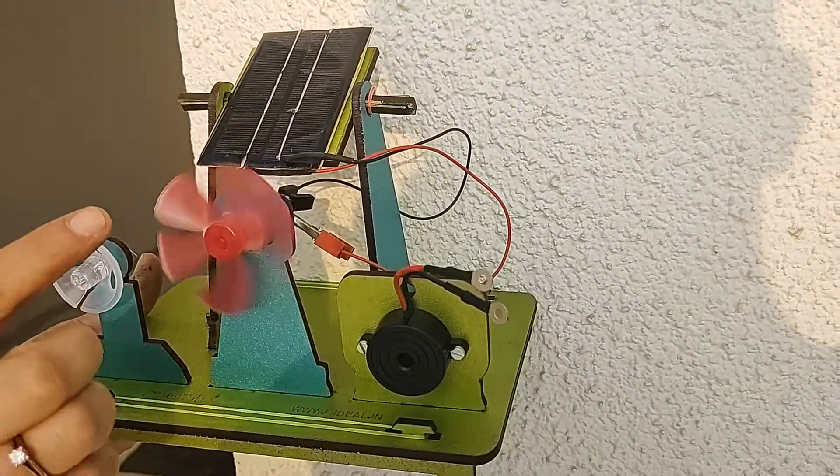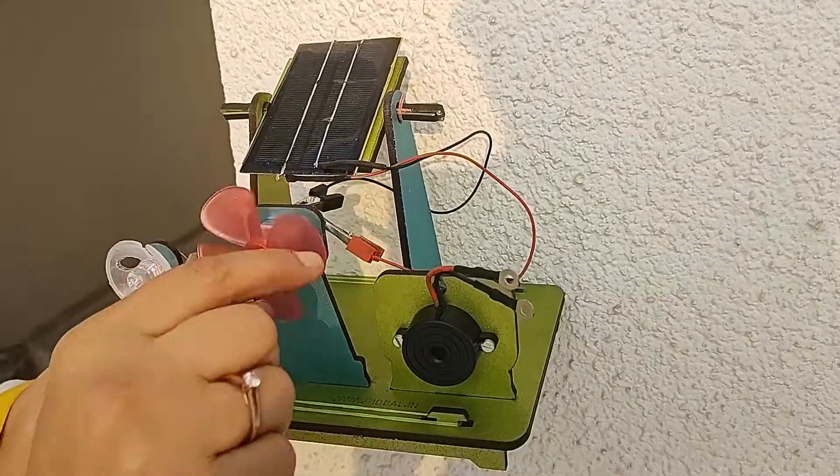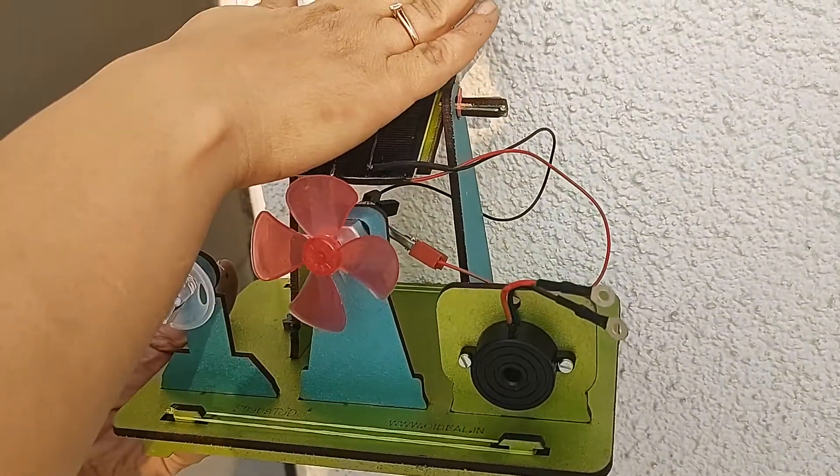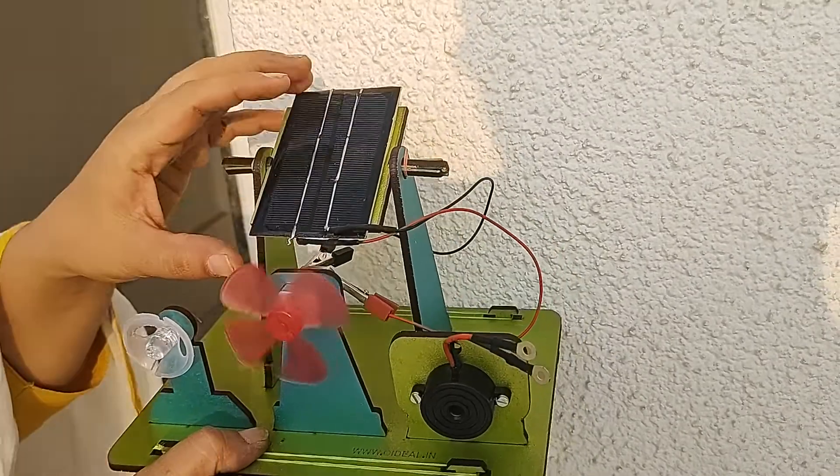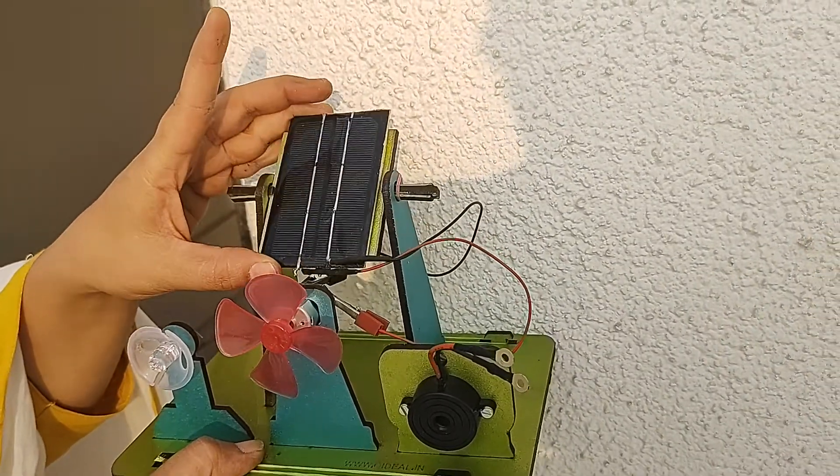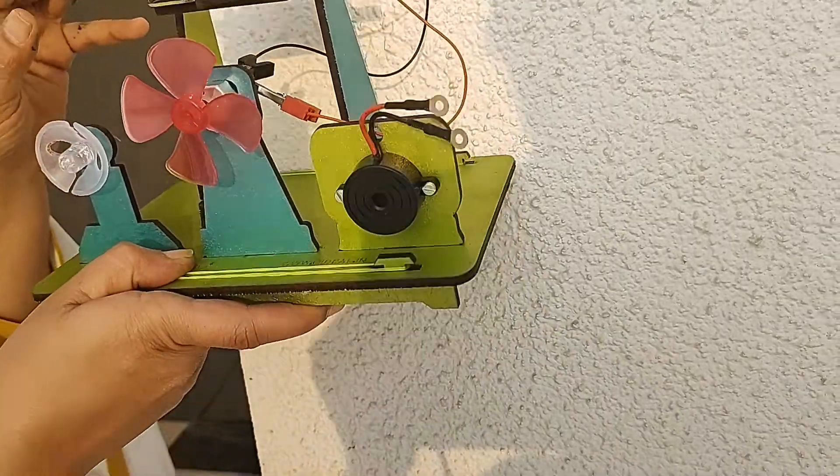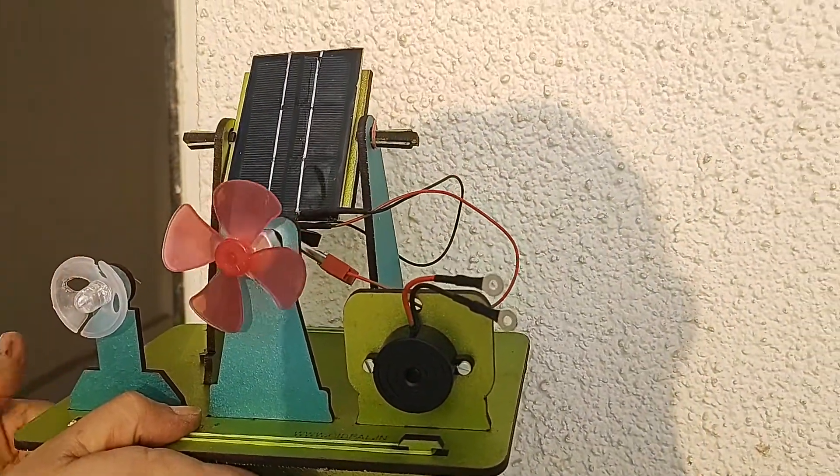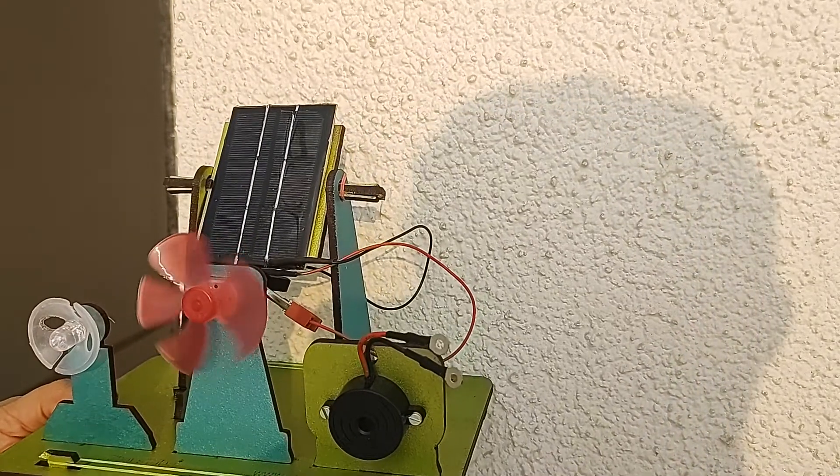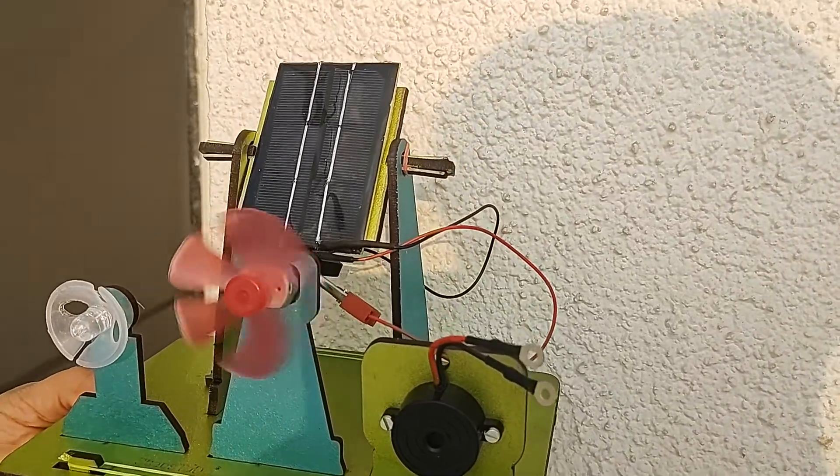Now see, you can see there is direct sunlight on the panel and that's why this motor is running. If I put my hand, the motor will stop, then again it will run. Now this panel is flexible, you can arrange it and adjust it as per the direction of the sun as well. Now see, right now I will again give it a start and now see.